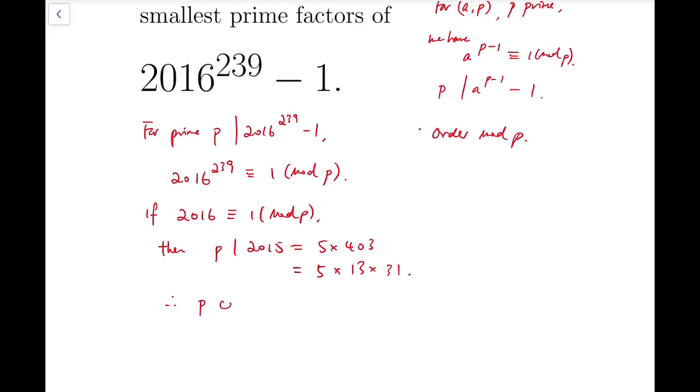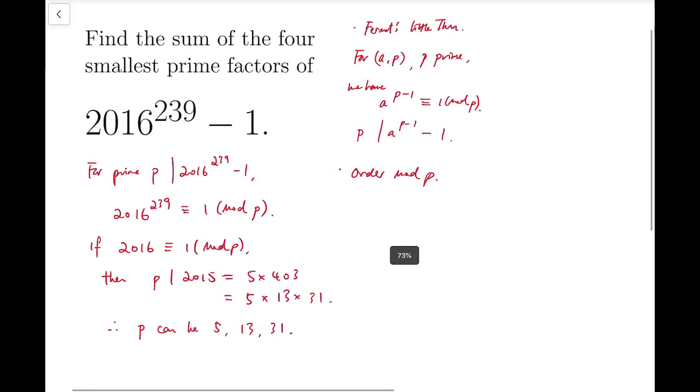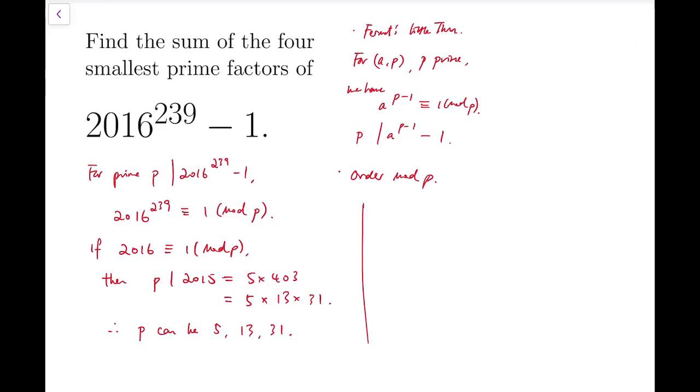And so therefore, some prime factors are p can be 5, 13, or 31. So that's the easiest prime factors we can obtain.